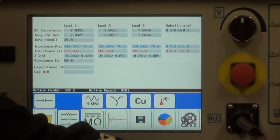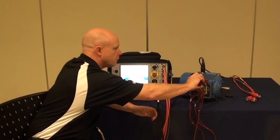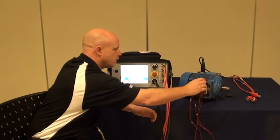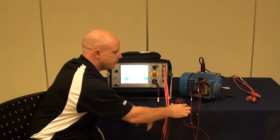Here what we do is we put lead two to earth, we leave one connected to the winding, and we leave lead three open.